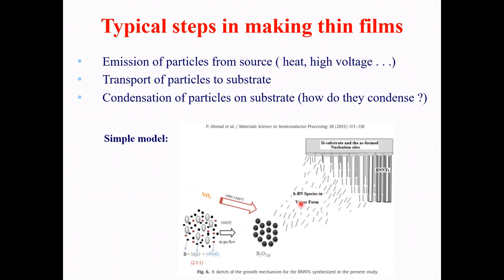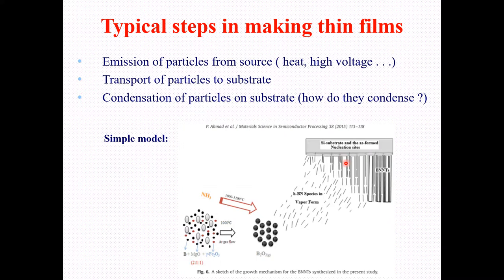To repeat: the first step is emission of particles from the source — the precursor materials are boron, magnesium oxide, and iron oxides, heated to 1000–1200 degrees centigrade and converted into vapor. The second step is transportation of particles to the substrate, carried by argon gas flow. The third step is condensation of particles on the substrate in the form of boron nitride nanotubes. These are the typical steps involved in deposition of thin film.